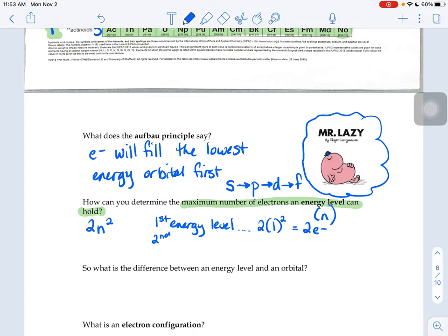If you're in the second energy level, we'll plug 2 into that equation. So 2 squared is 4 times 2 is 8. If you're in the third energy level, we plug 3 into that equation. 3 squared is 9 times 2 is 18.